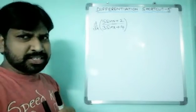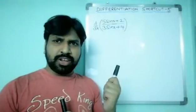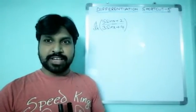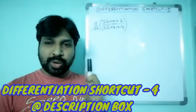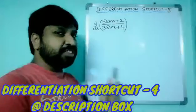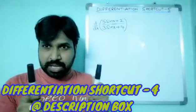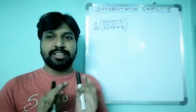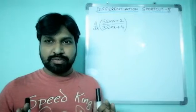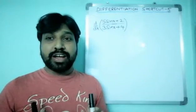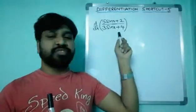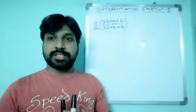Friends, can you guess what is the difference between shortcut number 4 and shortcut number 5? Shortcut number 4 is only applicable for x — it is of the form (ax + b) / (cx + d). Shortcut number 5 is applicable for any function, not just x.